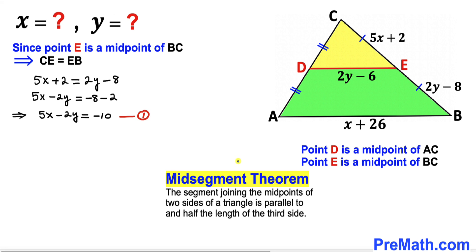Now let's recall the midsegment theorem. According to this theorem, the segment joining the midpoints of two sides of a triangle is parallel to the third side and is half the length of that side.